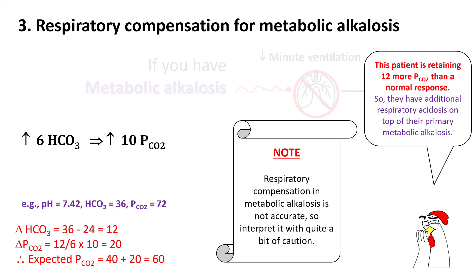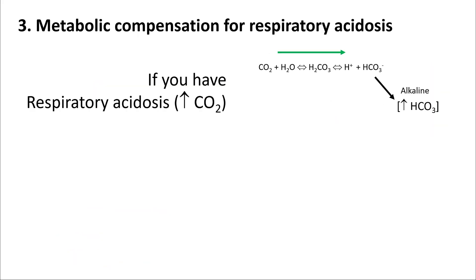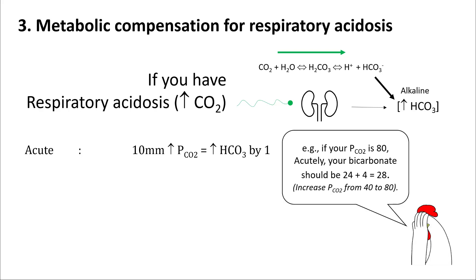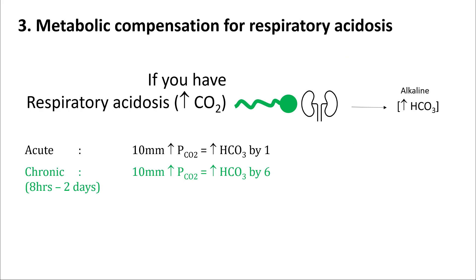For respiratory acidosis, the CO2-to-bicarb reaction shifts right, producing more bicarb and stimulating kidneys to make more bicarb. Acutely, a 10 mmHg rise in pCO2 increases bicarb by 1. For example, if pCO2 is acutely 80, bicarb should be 24 + 4 = 28. In chronic conditions, most bicarb is produced by renal compensation, and a 10 mmHg rise in pCO2 increases bicarb by 6. For respiratory alkalosis, the reaction shifts left, losing bicarb and becoming more acidic, while also inhibiting renal bicarb production. Acutely, a 10 mmHg fall in pCO2 drops bicarb by 2. For example, if pCO2 is 20, bicarb should be 24 − (2 × 2) = 20. Chronically, every 10 mmHg fall in pCO2 drops bicarb by 6.